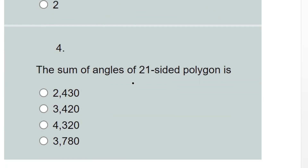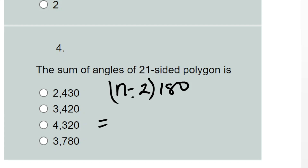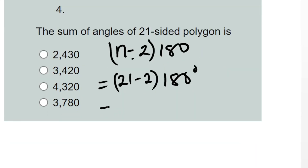The fourth question asks for the sum of angles of a twenty-one-sided polygon. We apply the formula n minus 2, times 180. So that is twenty-one minus two, multiplied by 180 degrees.